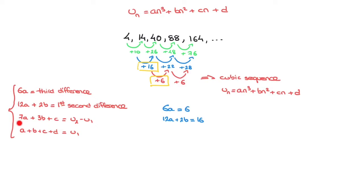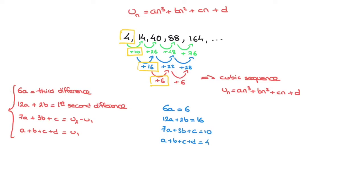Moving on to the third equation: 7a plus 3b plus c equals u2 minus u1, the difference between the first two terms. Looking at our first differences, that's 10 — the first value on the differences row. So 7a plus 3b plus c equals 10. Finally, the fourth equation: a plus b plus c plus d equals u1, so a plus b plus c plus d must equal 4, the first term of our sequence.